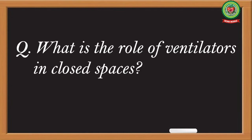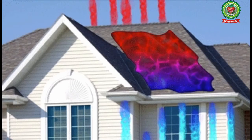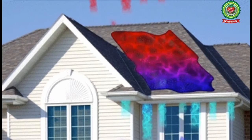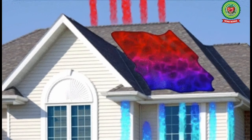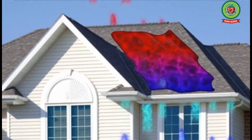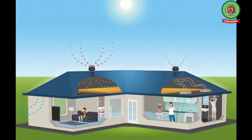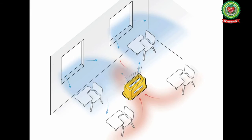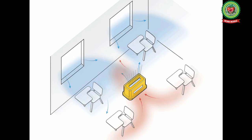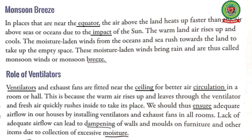The answer is: ventilators and exhaust fans are fitted near the ceiling so that warm air rises up and leaves the room through the ventilator, and fresh air enters the room. We should ensure adequate airflow in our houses by installing ventilators and exhaust fans in all rooms.